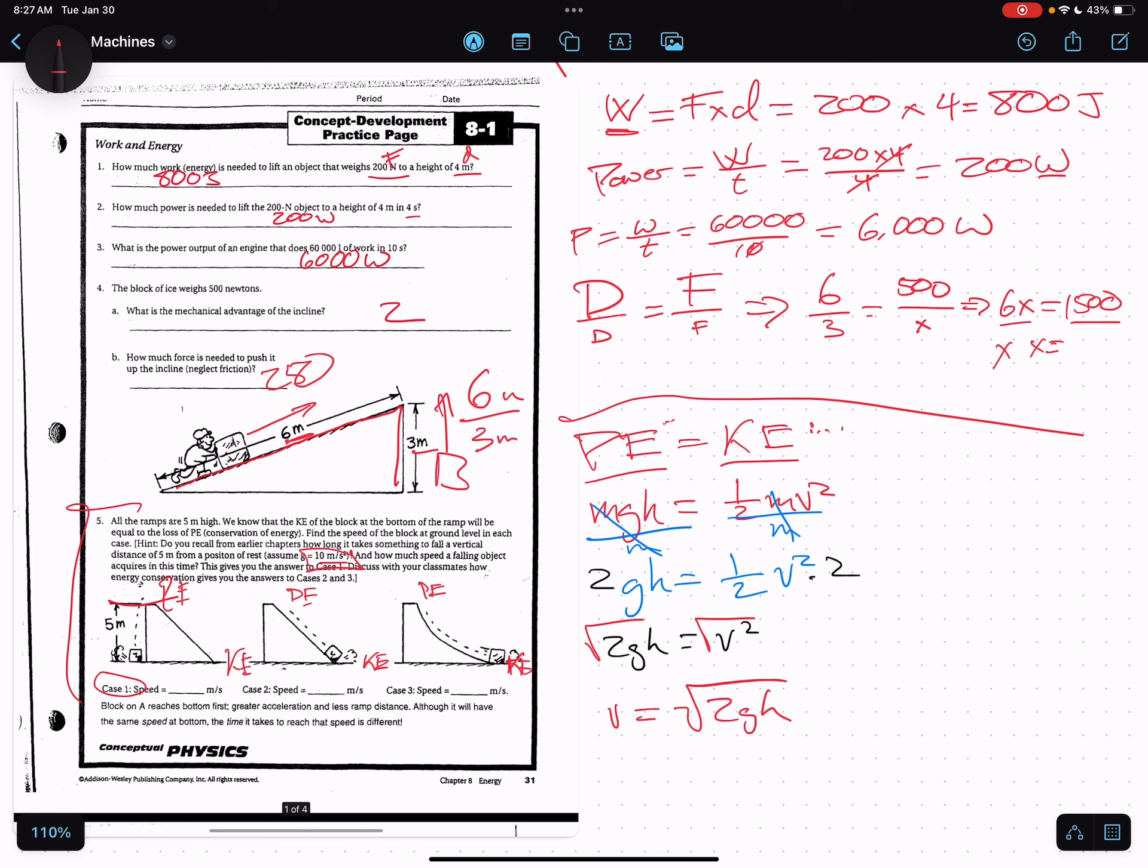So I have square root in my calculator, second square root, two times 9.8 times my height, which was five. So I have square root two times 9.8 times five is equal to 9.899 or basically 10 meters per second.